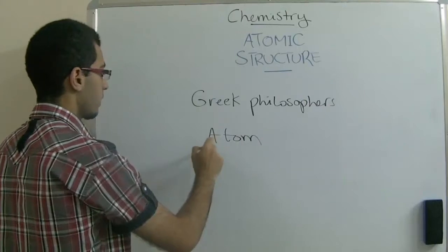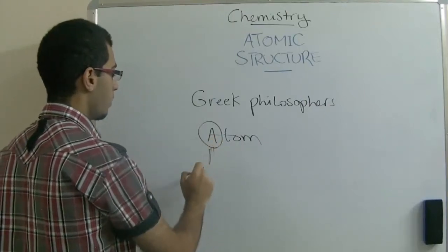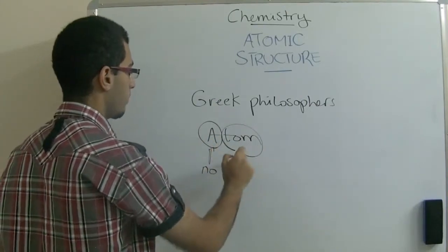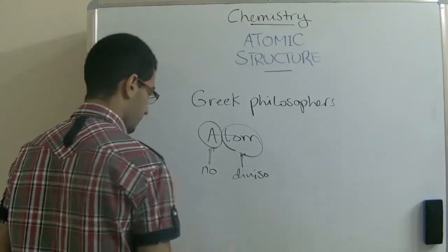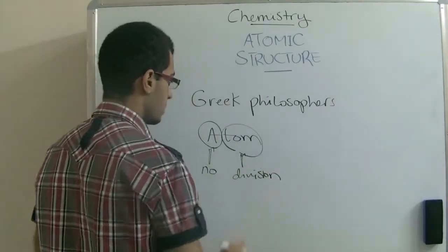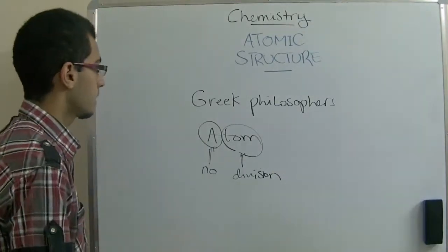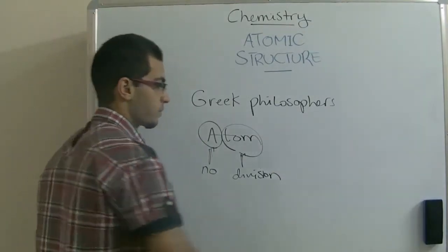In Greek, 'a' means no and 'tom' means division. So it means that this particle doesn't divide. So this is the first point.